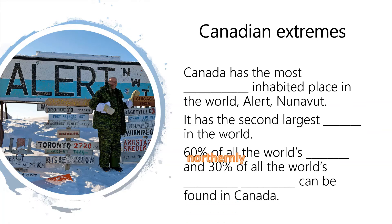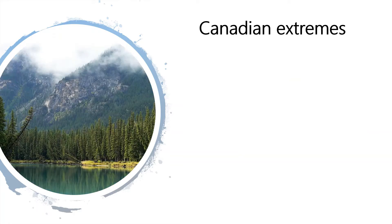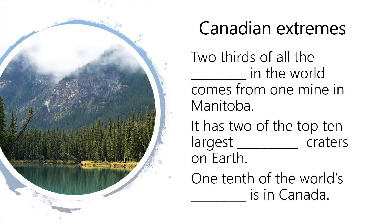Canada has the most northerly inhabited place in the world — Alert, Nunavut. It has the second largest bay in the world. Sixty percent of all the world's lakes and thirty percent of all the world's fresh water can be found in Canada. Two-thirds of all the cesium in the world comes from one mine in Manitoba. Cesium is a soft, silvery-golden metal and it is one of only five elemental metals that are liquid at or near room temperature.